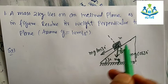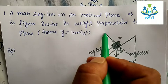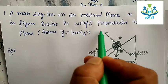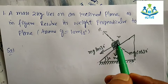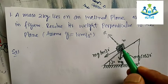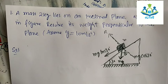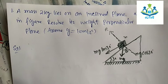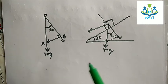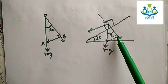The normal reaction force R acts perpendicular to the plane. We have this weight mg and we have to resolve it into horizontal and vertical components. So if we take a right angle triangle here and draw perpendicular to the plane.